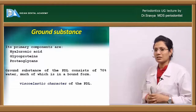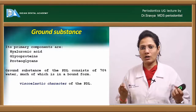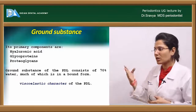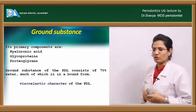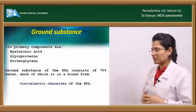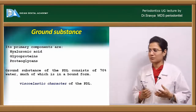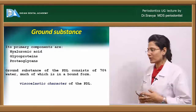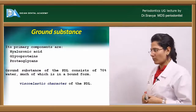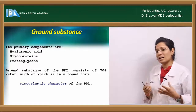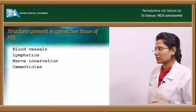The important constituents of the ground substance are glycosaminoglycans and proteoglycans, which include hyaluronic acid and chondroitin sulfate. The ground substance of the PDL is composed of 70% water, much of which is in a bound form. The viscoelastic nature of the PDL is mainly because of the ground substance.